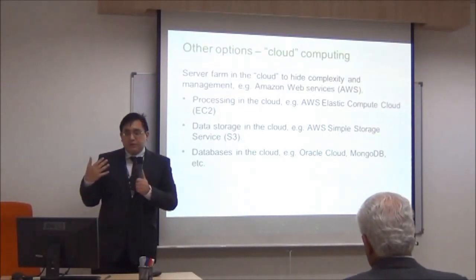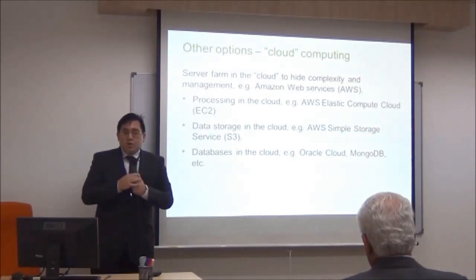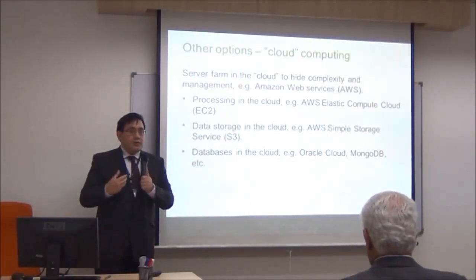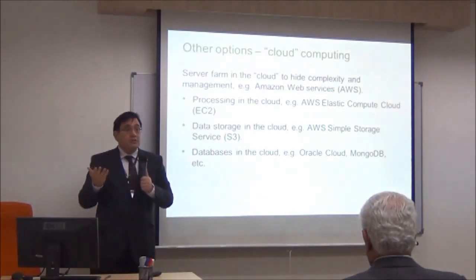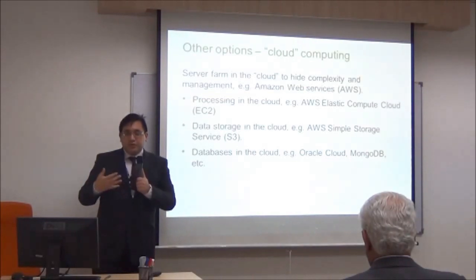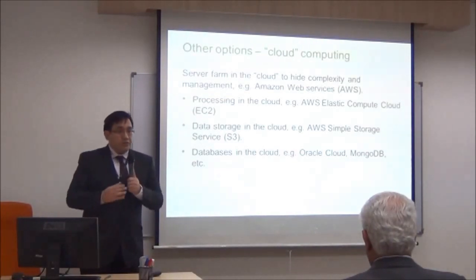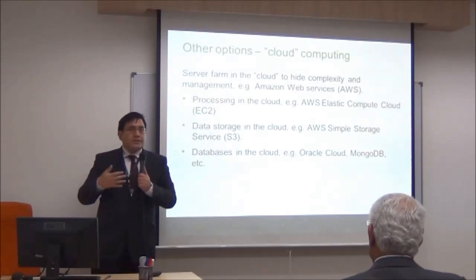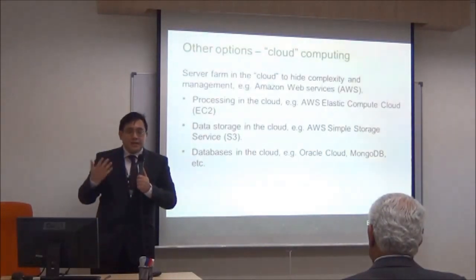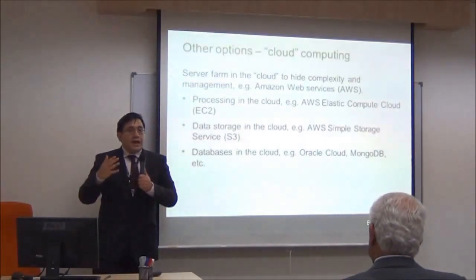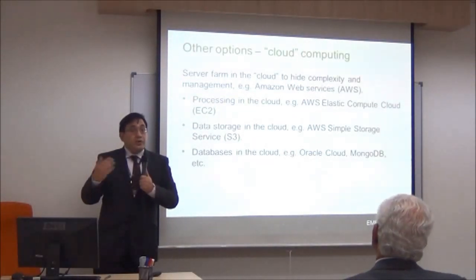In the cloud, processing is handled by something called AWS Elastic Compute Cloud, EC2. As I mentioned with LSF, we have the Network File System; in the cloud you can have cloud file systems. You might have heard of Dropbox or Google Drive as cloud storage. Amazon has enterprise-level storage called Simple Storage Service, S3. You can also have databases in the cloud — not just files and processing, but databases for updating records and saving extra information, such as Oracle cloud databases or MongoDB databases, which interface very well with other cloud services.